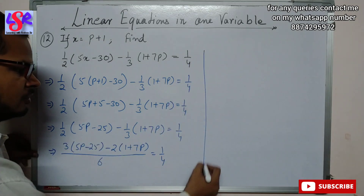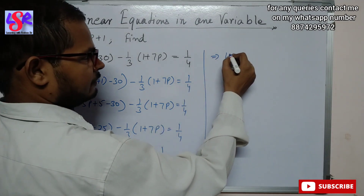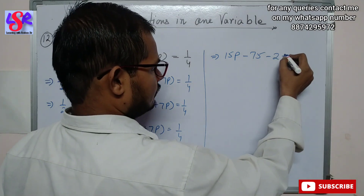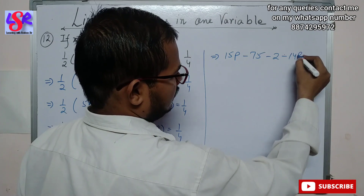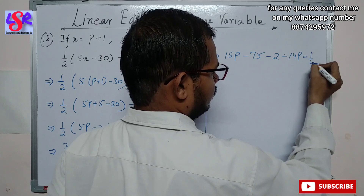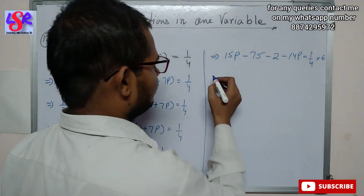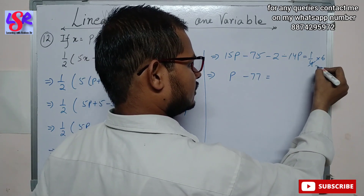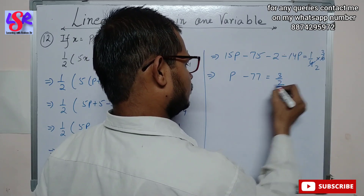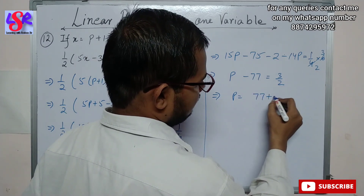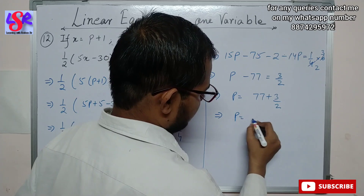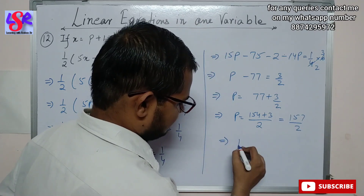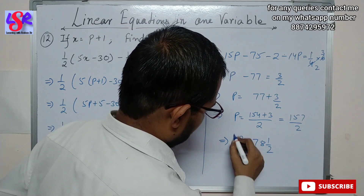Expanding the numerator: 3 × 5p = 15p, 3 × (-25) = -75, -2 × 1 = -2, -2 × 7p = -14p. Combining: (15p - 14p) + (-75 - 2) = p - 77. So (p - 77)/6 = 1/4. Cross multiplying: 4(p - 77) = 6, giving p = 77 + 3/2 = 157/2 = 78½ as the answer.